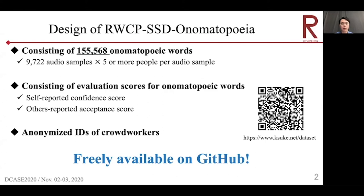This dataset includes three types of contents. First, a total of 155,568 onomatopoeic words. Second, two types of variation scores for onomatopoeic words. Finally, anonymized IDs of crowd workers who gave onomatopoeic words, confidence scores, and acceptance scores. This dataset is freely available. Please find RWCP SSD Onomatopoeia online.